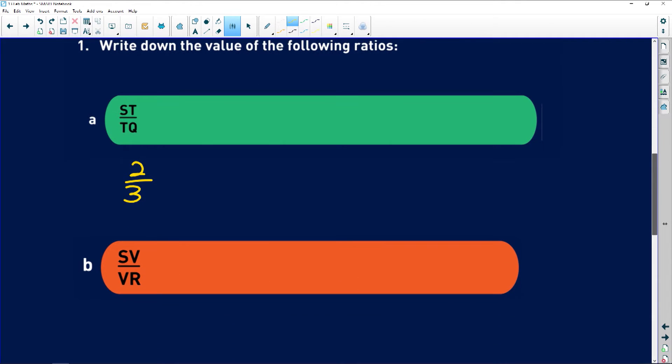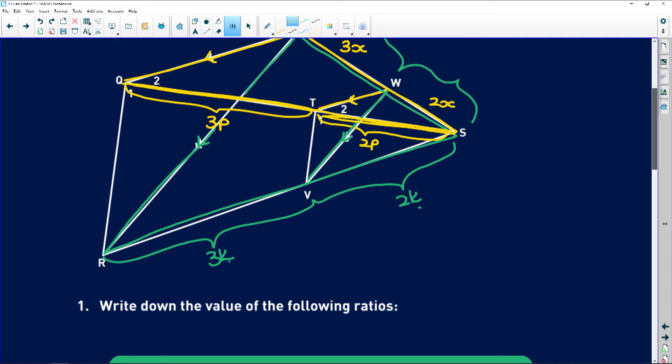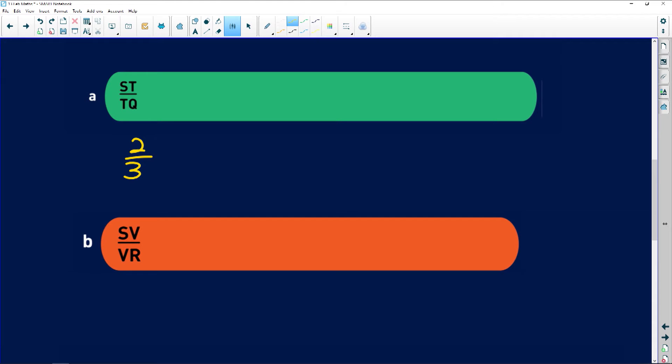Then it says find the ratio of SV to VR. That is in our green triangle. Now because there is a parallel line coming from W and it is still this ratio over here guys. It is still the ratio that we're dealing with. So SV to VR is also 2 over 3.